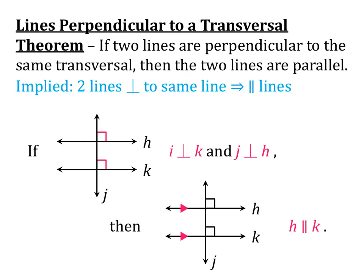Our final theorem for this section is the Lines Perpendicular to a Transversal Theorem: if two lines are perpendicular to the same transversal, then the two lines are parallel. The implied shorthand: two lines perpendicular to the same line implies parallel lines. In the illustrative if-then version: transversal line J is perpendicular to both K and H — so J is perpendicular to K and J is perpendicular to H. If that's true, then we can say H is parallel to K.